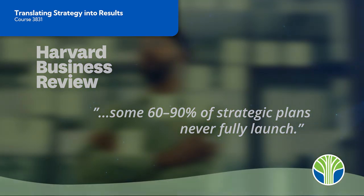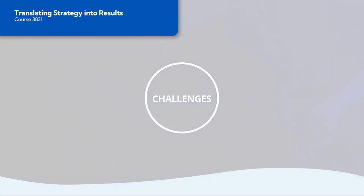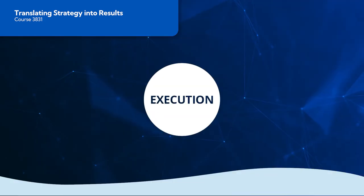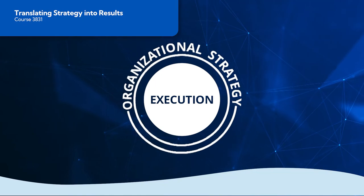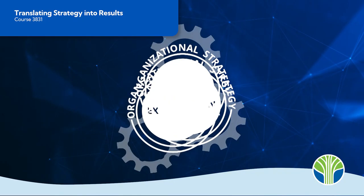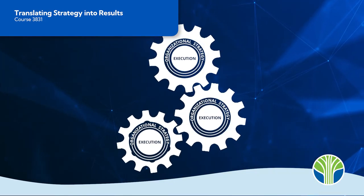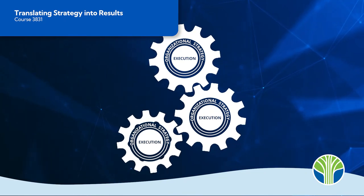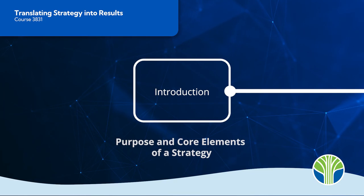This course identifies the challenges that cause that failure and shows leaders how to align execution with the larger organizational strategy, architect their own strategies, and maintain the alignment of strategy with the critical domains of operations and people.